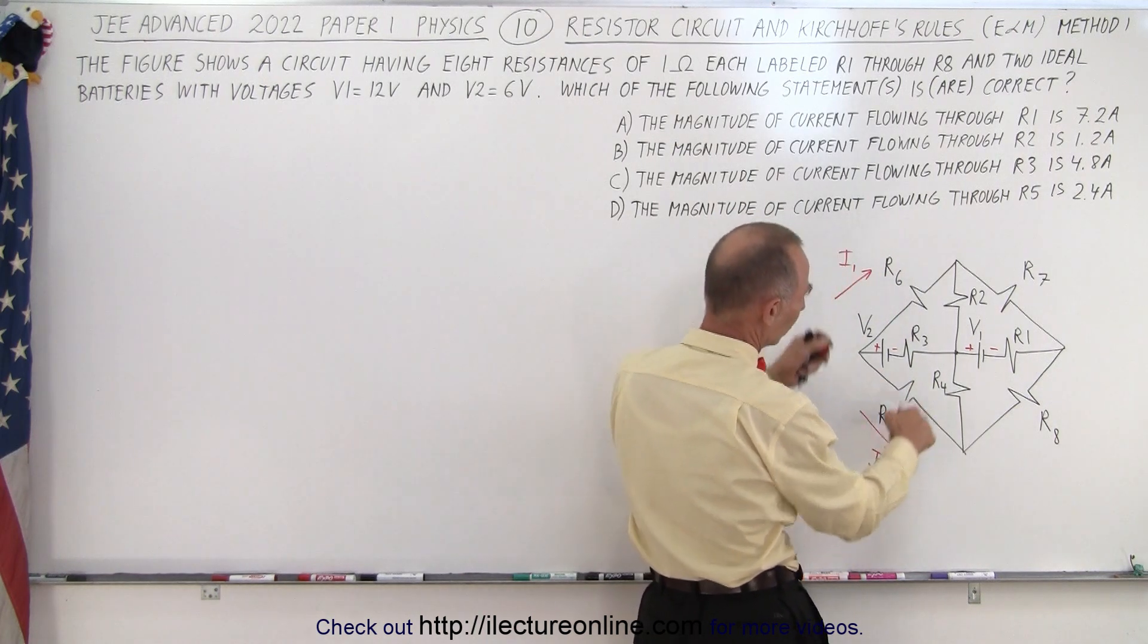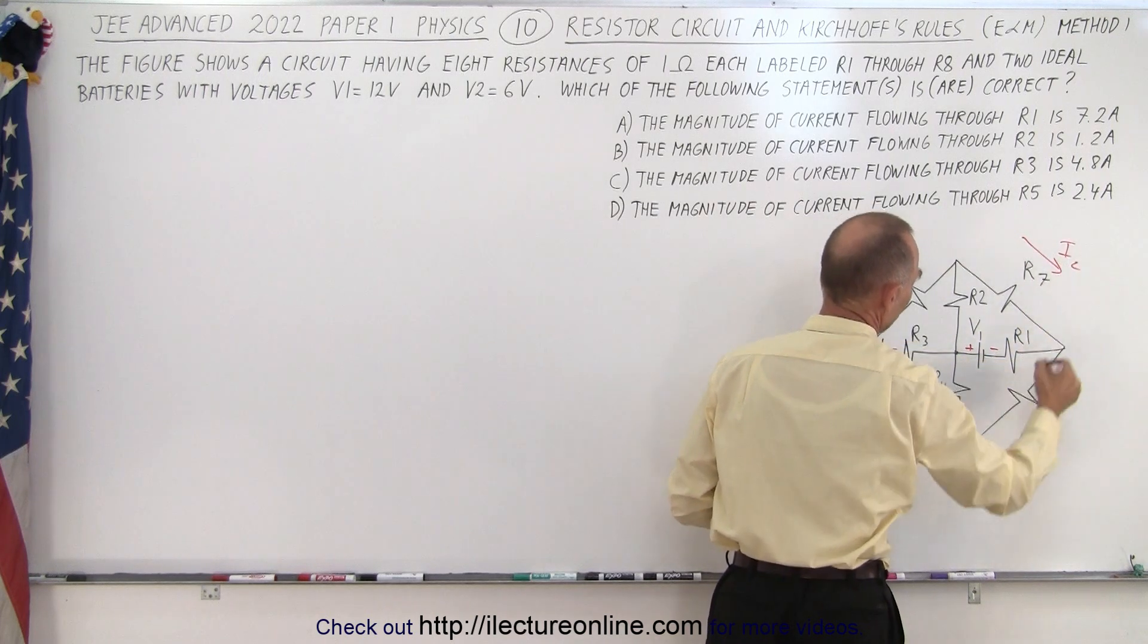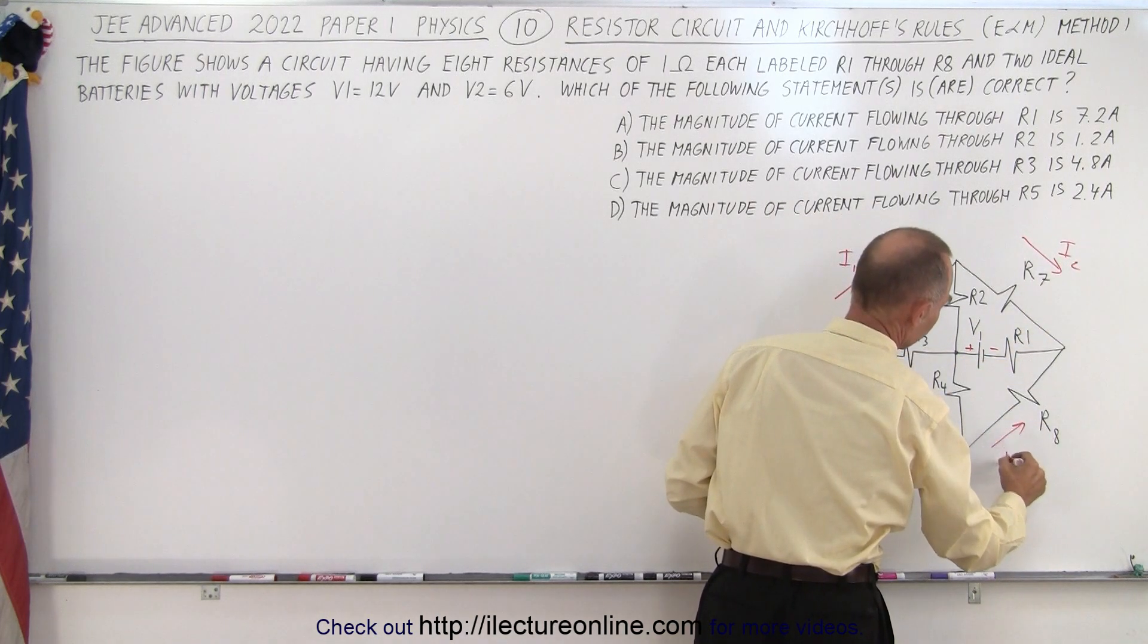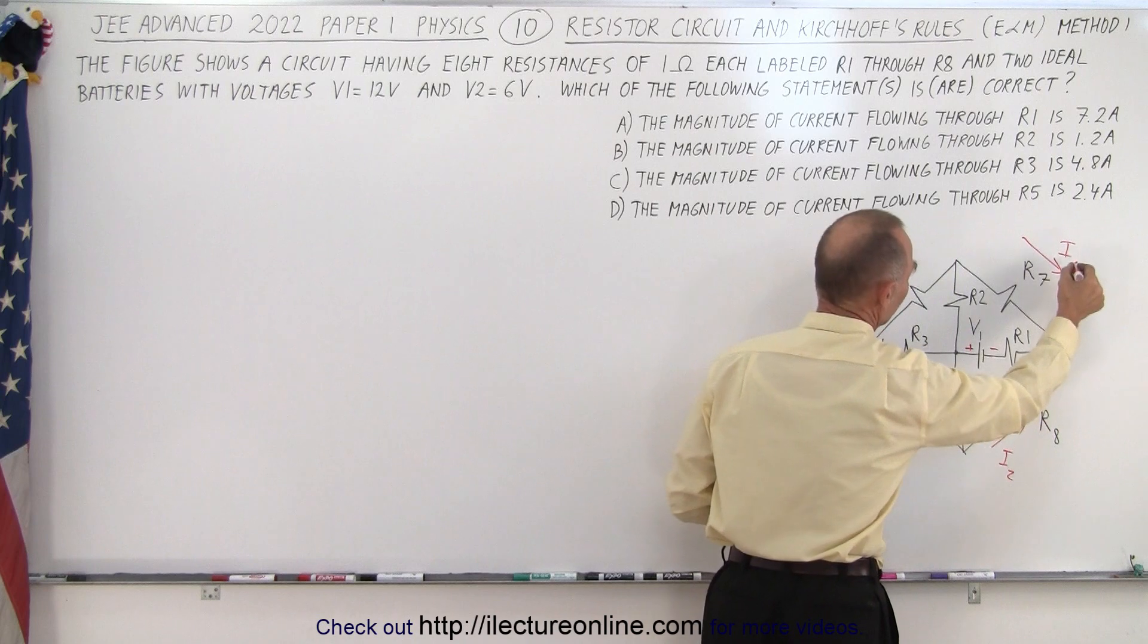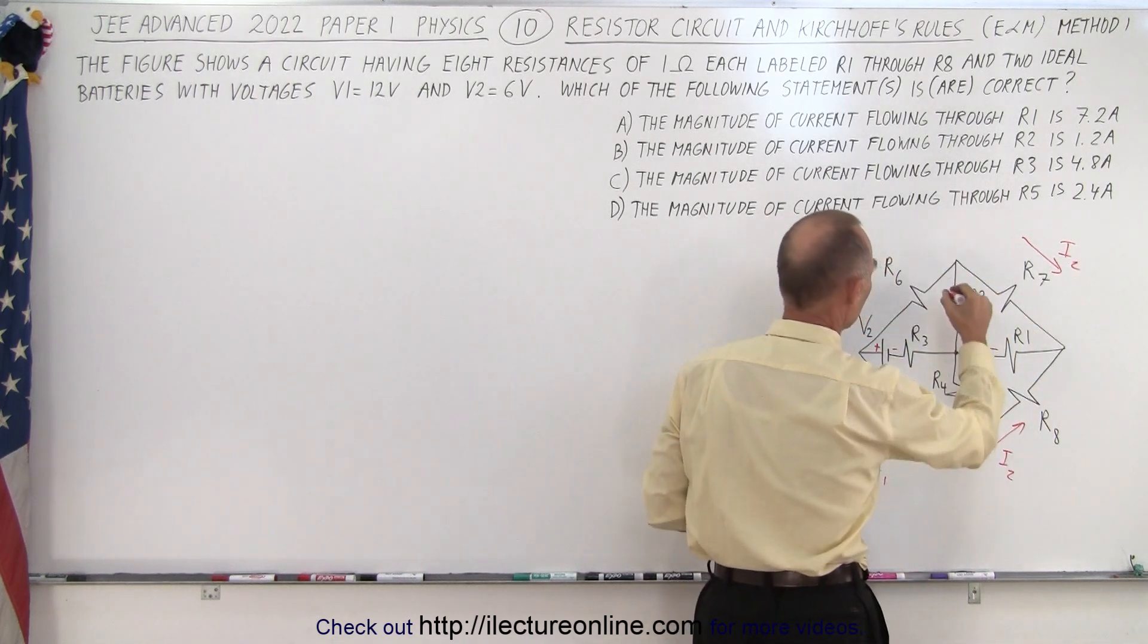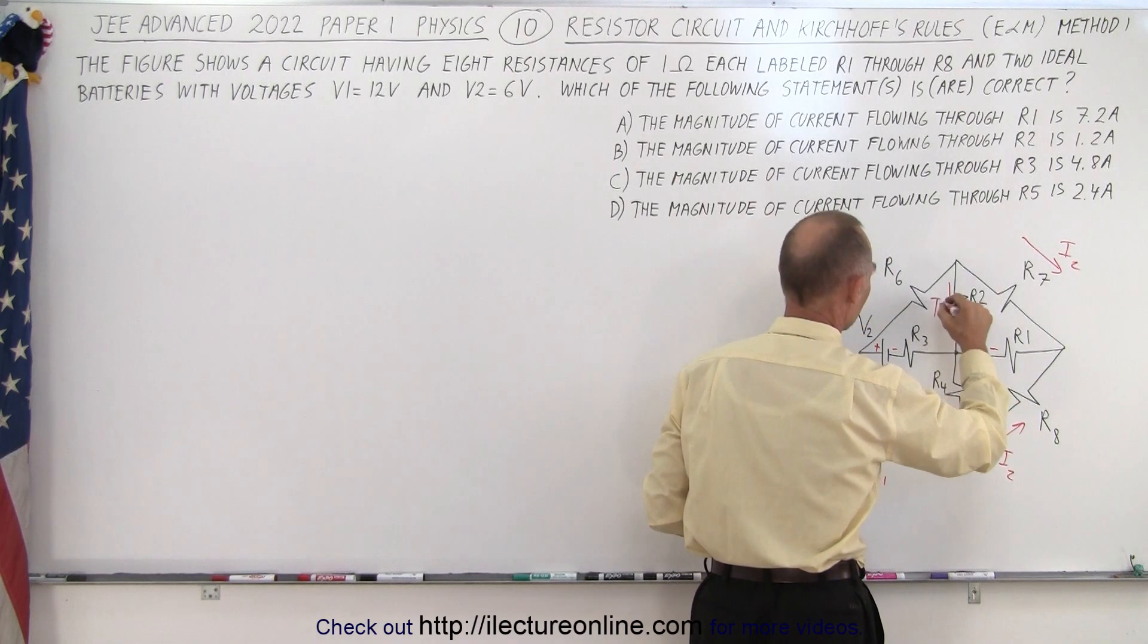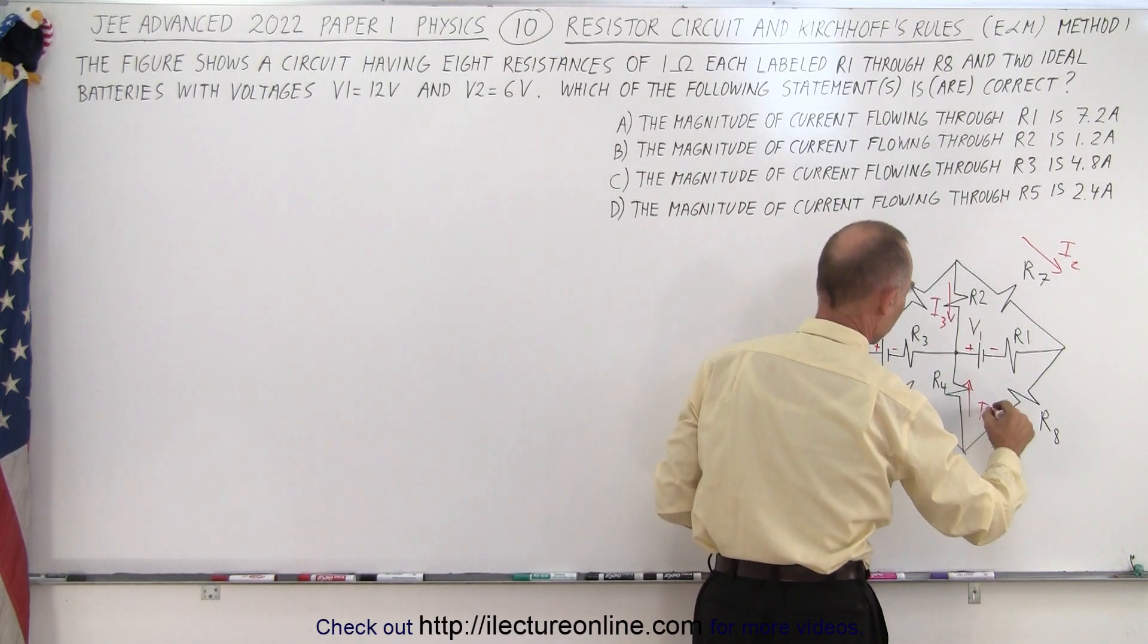Then here we can call the current through here I2 and the same over here we can call that I2. And then since there's perfect symmetry we can then see that the current going this way should also be the same. So we're going to call that I3 in this direction and I3 in this direction.